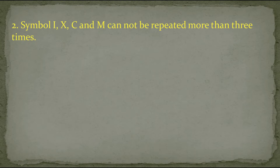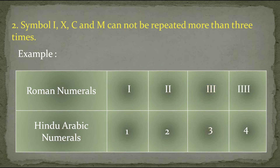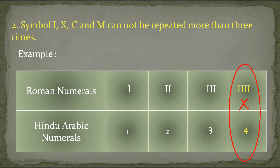Let's understand this by example. If we write I one time it equals 1; two times it equals 2; three times it equals 3. But if we write I four times, it will not be equal to 4 — this method is wrong because of this rule. Instead of writing I four times, we have to write IV, and this is correct.